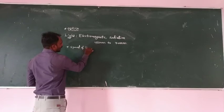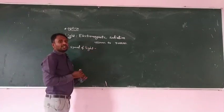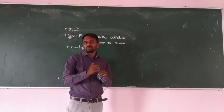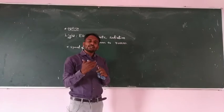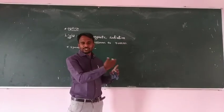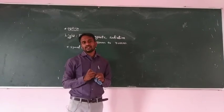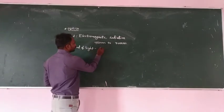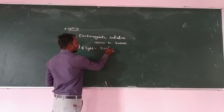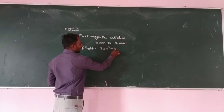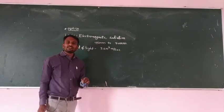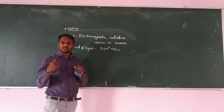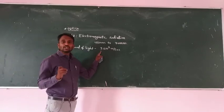The speed of light in a vacuum is particularly noted because whenever light travels in different media, its velocity changes. This is why we specify vacuum as the reference medium for the speed of light.